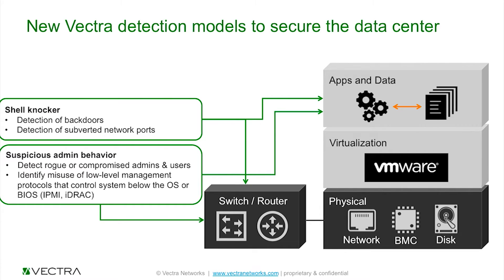The next capability is something we call Shell Knocker. This is looking for things like Sinful Knock — pieces of malicious code that sit beneath an operating system and can subvert either the physical infrastructure or a specific network port. When you have those low-level rootkits, there'll be a knocking sequence — essentially a sequence the attacker sends that lets the rootkit know this traffic is for it. We watch and model all traffic on all ports to understand when we see things out of the norm and can recognize that shell knocking sequence — both at the physical level down to the port level, and at the apps and data level of your virtualized environment.